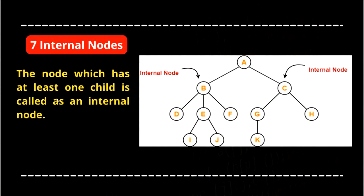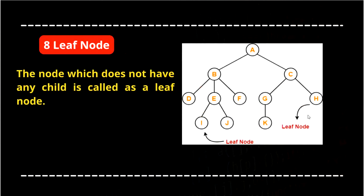Internal nodes: the node which has at least one child is called an internal node. A is an internal node as well as a root node because it has 2 children. B is also an internal node because it has 3 children. C is also an internal node because it has 2 children. E and G are also internal nodes because they have children. D, F, and H are not internal nodes.